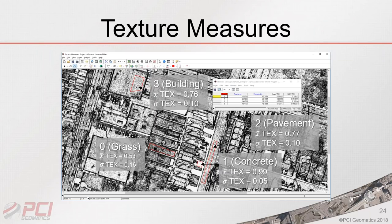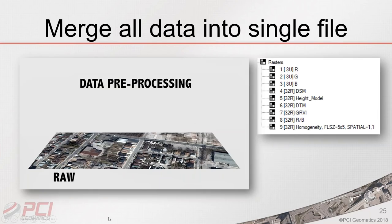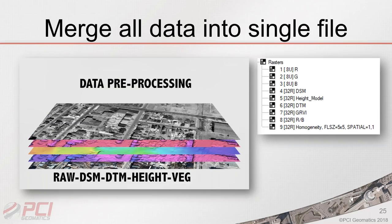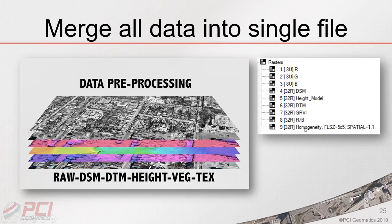All the derived data can be merged into a single dataset — one of the key advantages of using Object Analyst within Geomatica. Starting from raw data, we produce the DSM and DTM, generate the height model, calculate vegetation indices, and compute texture. For every pixel we have all these channels: red, green, blue, DSM, DTM, height model, green-red vegetation index, a band ratio of red over blue, and a homogeneity layer — all inside a single PIX file used by Geomatica.